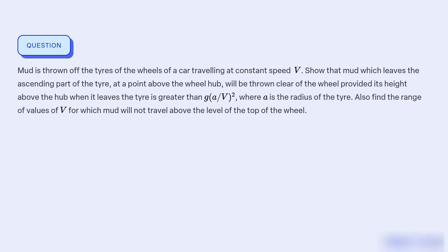What is the minimum height above the wheel hub that mud must be thrown from the ascending part of a car's tyre in order to be cleared from the wheel, and what is the range of values of the car's constant speed V when mud will not travel above the top of the wheel?